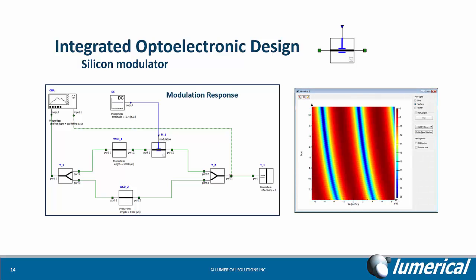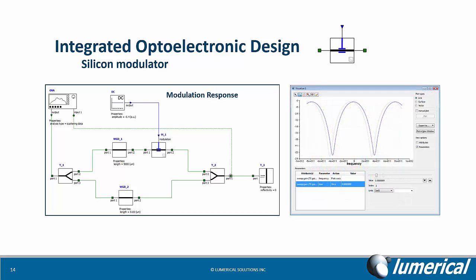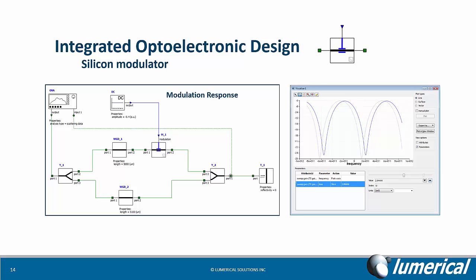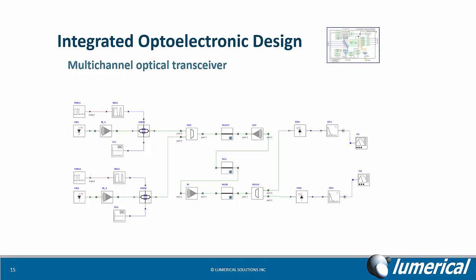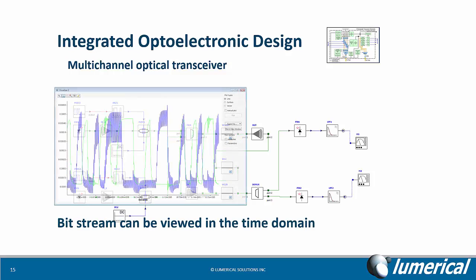DC and transient analysis can be combined with parameter sweeps to fully characterize your device. You can combine the different elements previously characterized into a very complex integrated circuit and perform signal integrity analysis. The mixed signal representation allows you to simulate digital, electrical, and optical parts of your circuit.